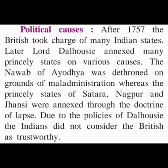After 1757, the British took charge of many Indian states. Lord Dalhousie annexed many princely states. The Nawab of Ayodhya was dethroned on grounds of mal-administration — he was blamed for misusing his powers. The princely states of Satara, Nagpur and Jhansi were also annexed through the Doctrine of Lapse, which meant that if any Indian ruler died without leaving a male heir, his kingdom would automatically pass to the British. Due to such policies, the Indians did not consider the British trustworthy.